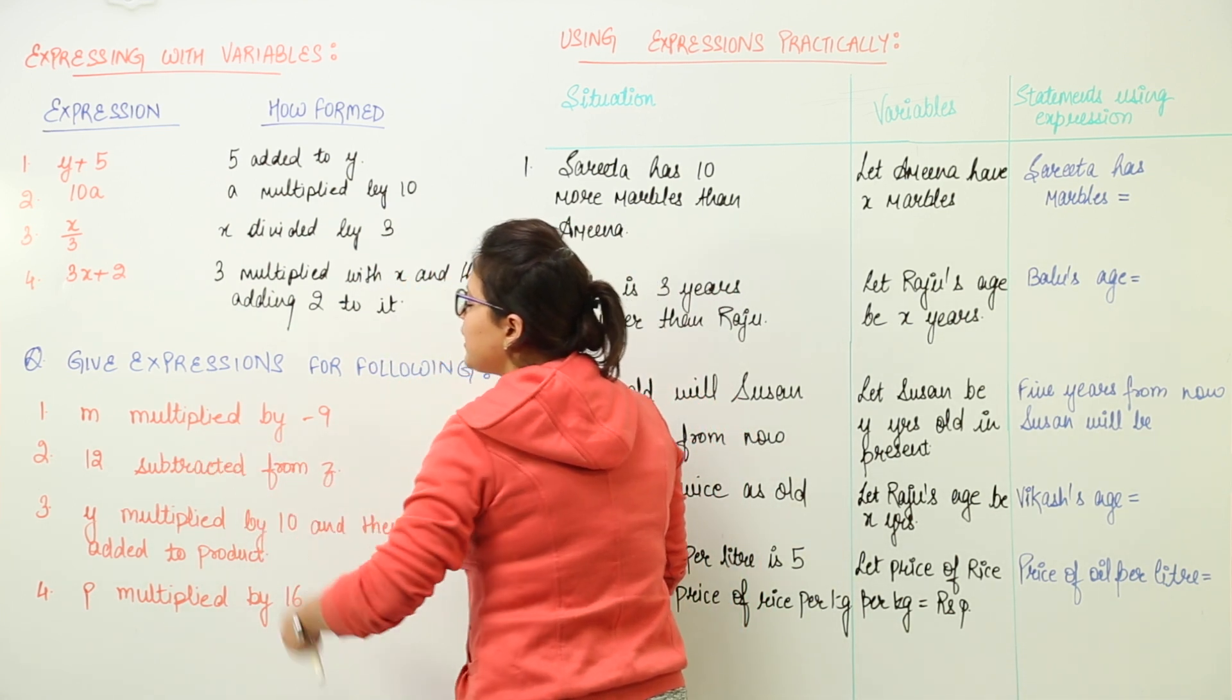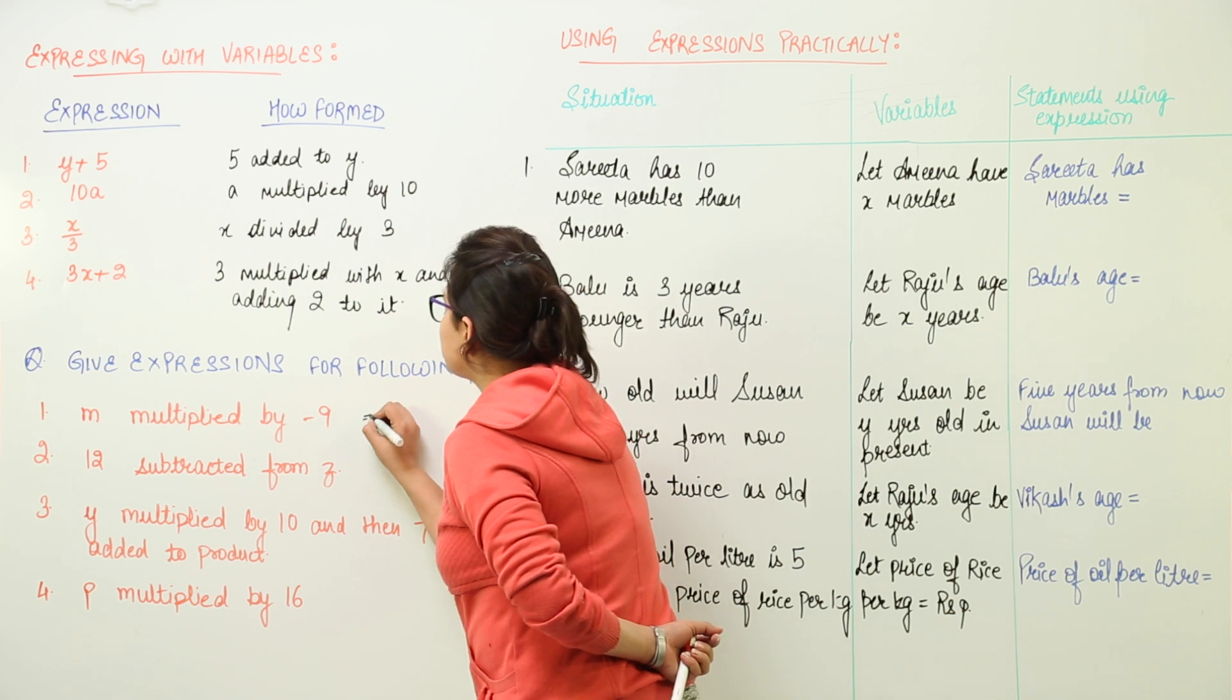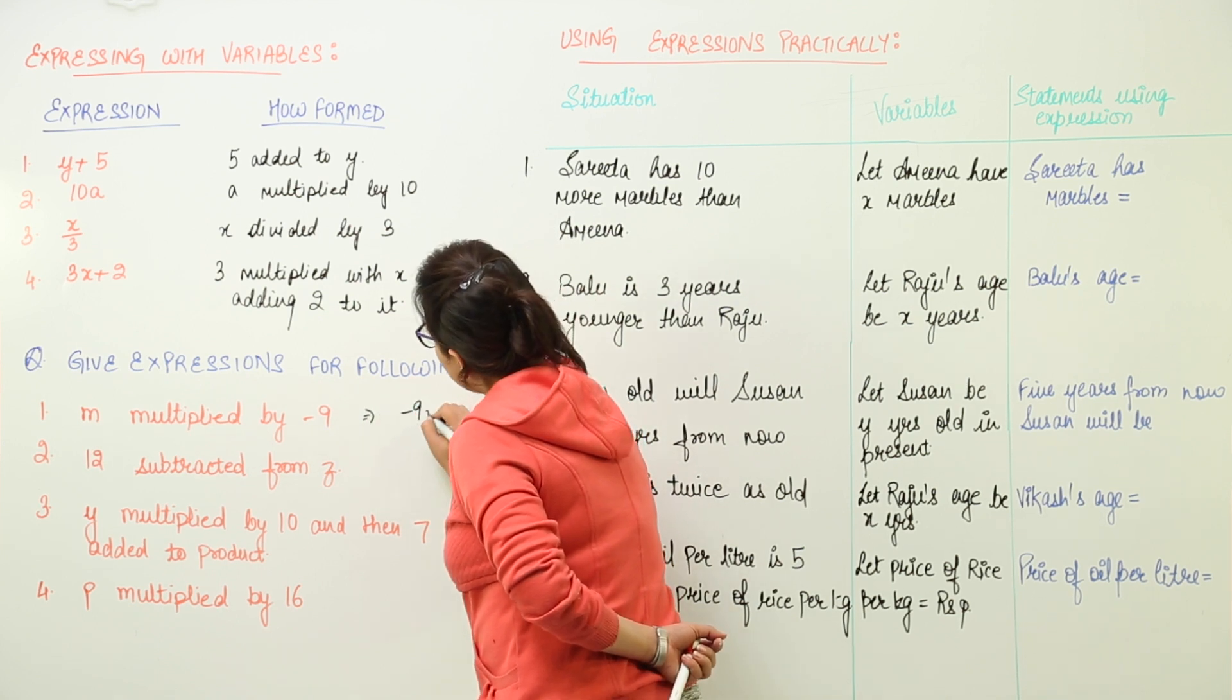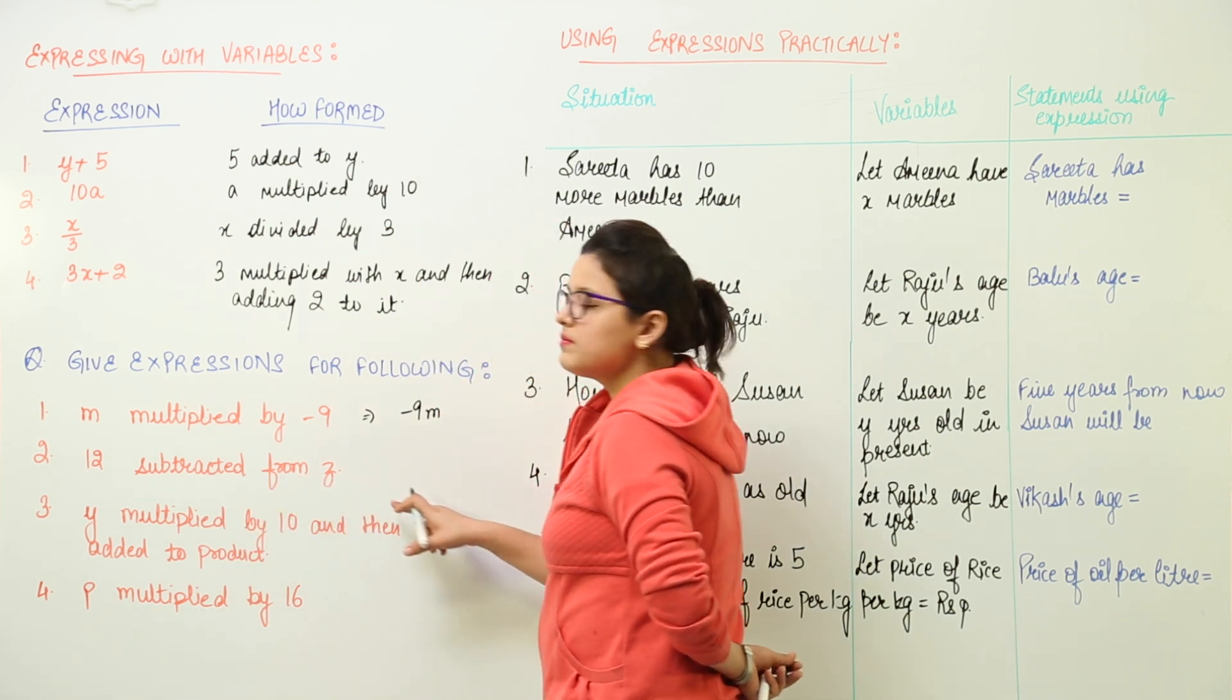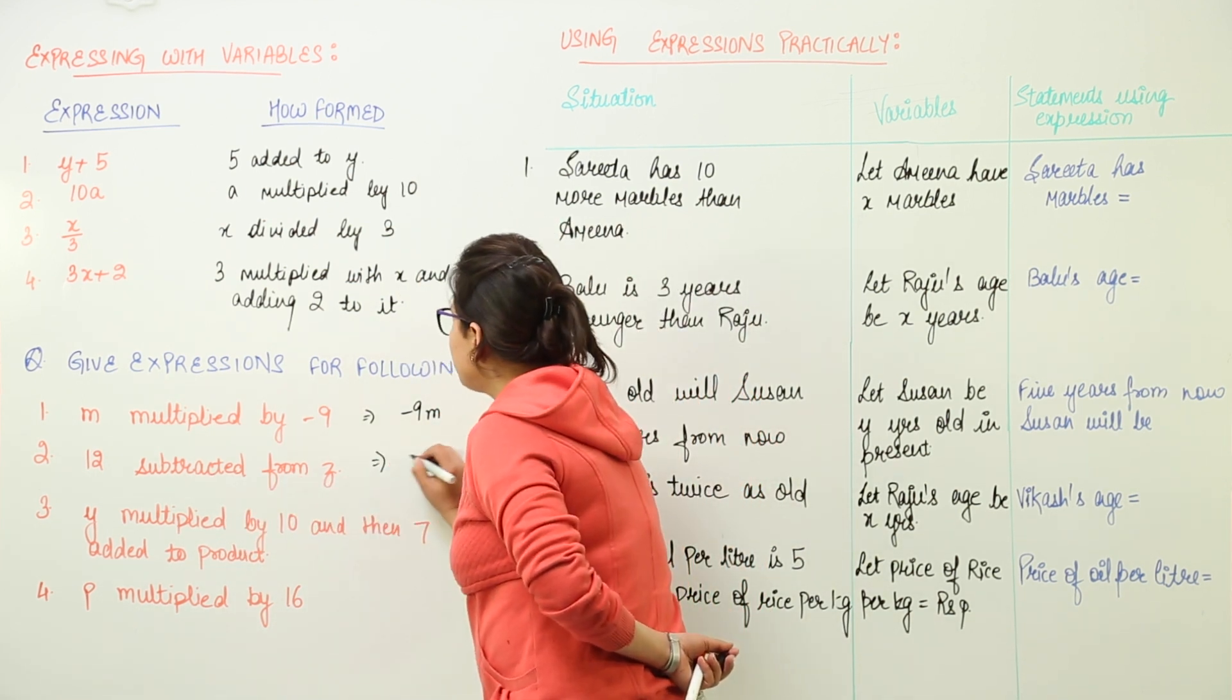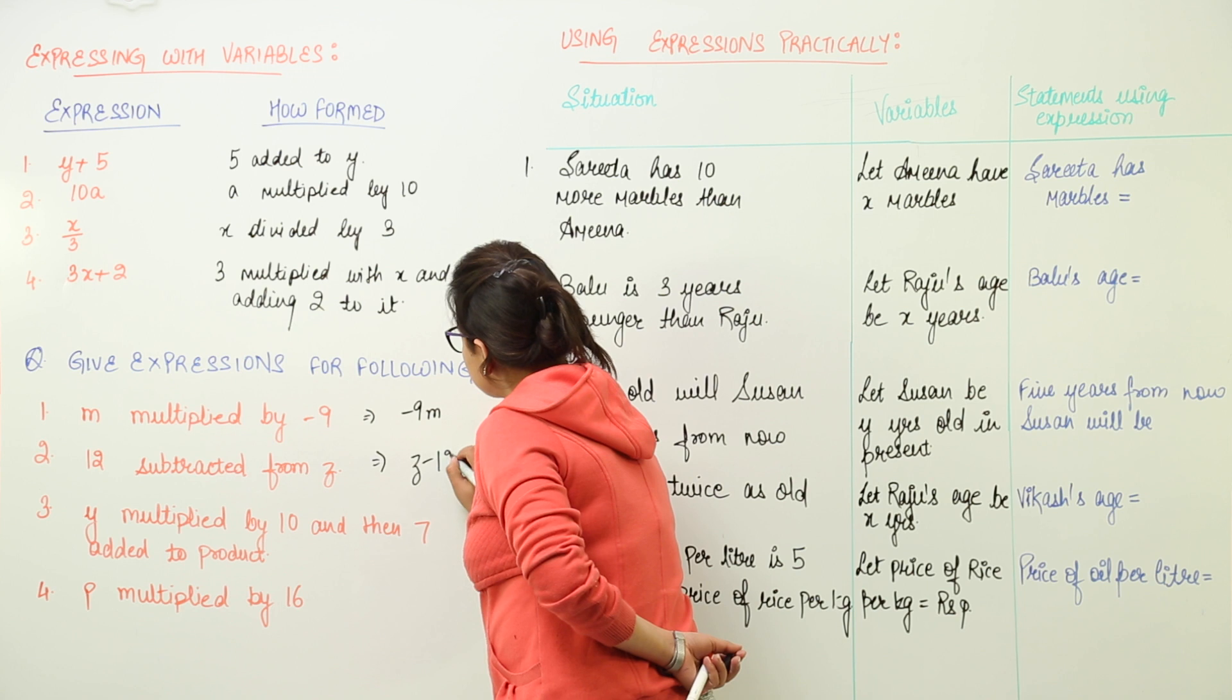Here we have m multiplied by minus 9. So this would give us minus 9m. Next is 12 subtracted from z. So here we would have z minus 12.